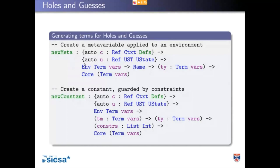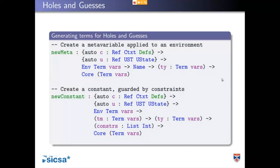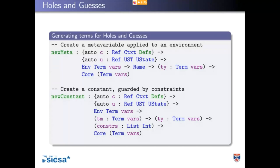Meta variables are represented as a global function appearing in the global context — any implicit you encounter is represented as a global function. They never get substituted in during elaboration. The terms that come out of elaboration will have applications of meta variables inside them. The reason we never substitute them in is because it preserves sharing. I'd say it's kind of an on-pessimization rather than optimization — if that's a real word, which it isn't. Meta variables are introduced with new meta and new constant.